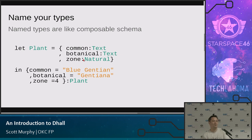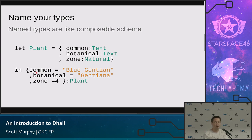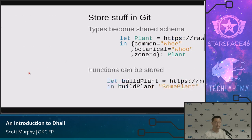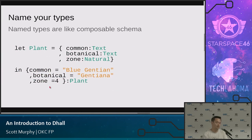Moving away from functional abstractions, let's talk about some other features in Dhall. One is the ability to name your types — this is where it really starts to feel like a schema. Here I can name this type Plant and say that Plant expects these three fields with these three types. Then somewhere else I can write a record, and this becomes an instance of Plant. So now that's starting to feel really like a traditional schema, like in XML. And the Dhall interpreter will check this for you, which is really neat.